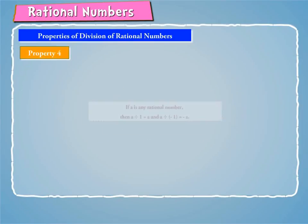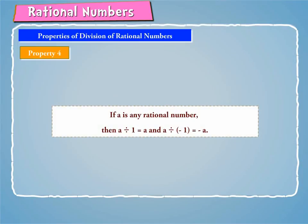Property 4: If A is any rational number, then A divided by 1 is equal to A, and A divided by minus 1 is equal to minus A. For example, minus 4 by 7 divided by 1 is equal to minus 4 by 7, and minus 4 by 7 divided by minus 1 is equal to 4 by 7.